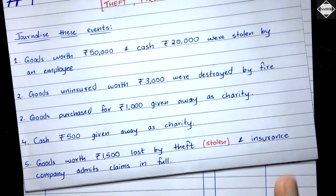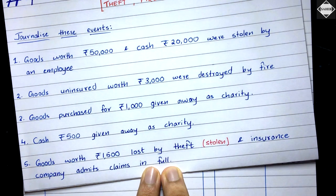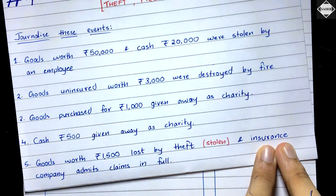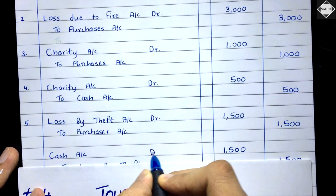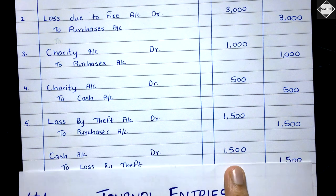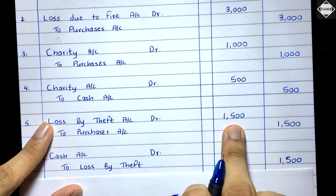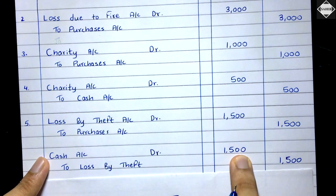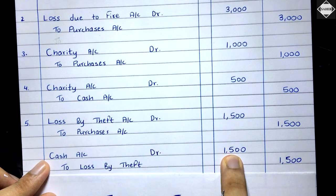The second event: the insurance company admits the claim in full — they have compensated us 1,500. We are receiving 1,500 money from the insurance company. So cash or bank account is increasing — debit 1,500. But we also need to reverse the loss we just recognized. A shortcut approach: Cash Account debit 1,500; to Loss by Theft Account 1,500 — directly reversing the loss rather than going through an insurance company intermediate account.